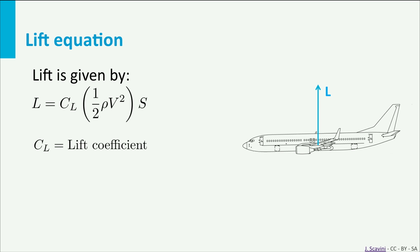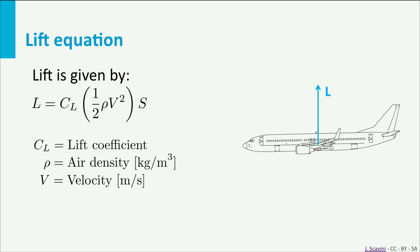Cl is the so-called lift coefficient. This parameter will be discussed in more detail on the next slides. Rho stands for the air density, v for the airspeed, and S is the parameter for the wing area, which is the surface area projected on the x-y plane when we take a Cartesian coordinate system where z is the vertical direction.